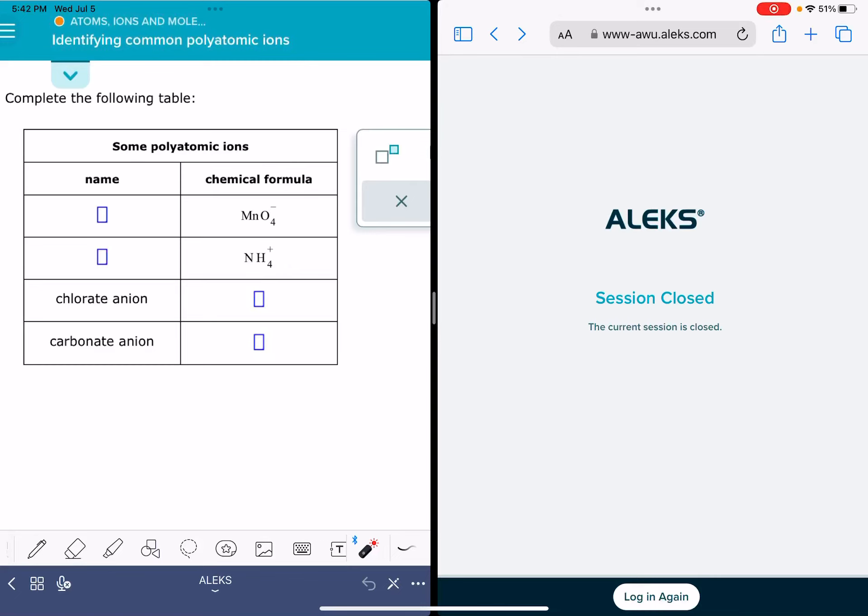In this video, I'm going to give you some tips for solving the Alex problem called identifying common polyatomic ions. This problem is going to have a table with four spots for you to identify either the name of a polyatomic ion from its formula or vice versa, the formula from its name.